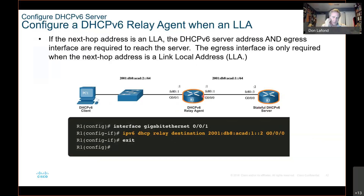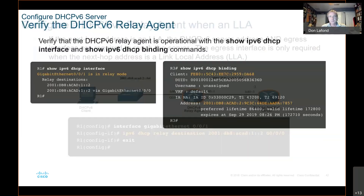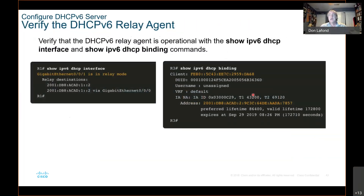Because those local link addresses — the LLAs — can be duplicated. R1 might have three different routers all with an FE80::3. That's why when you use a local link address as the next hop, you must also specify the egress interface.